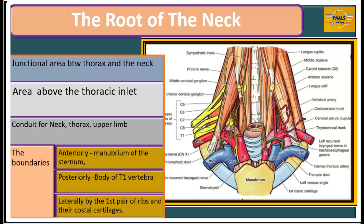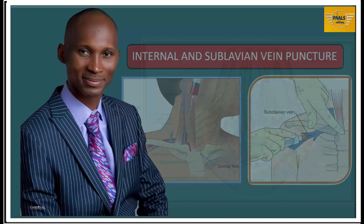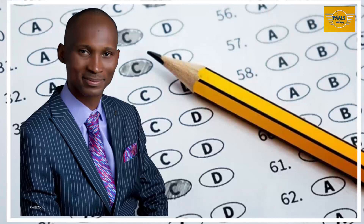In part two of the lecture, we will briefly look at some of the major structures within the root of the neck like the arteries, the veins and the nerves. Finally, in part three, which is the last part, we will consider clinical anatomy of the entire region studied and test our knowledge through a question and answer section where we will answer related questions from various examination boards. So sit tight — let's go to class.